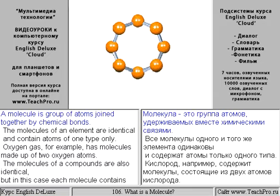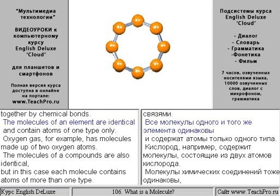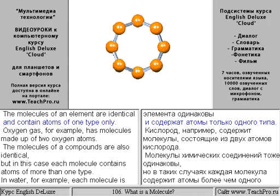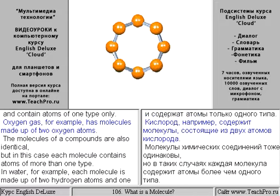A molecule is a group of atoms joined together by chemical bonds. The molecules of an element are identical and contain atoms of one type only. Oxygen gas, for example, has molecules made up of two oxygen atoms.